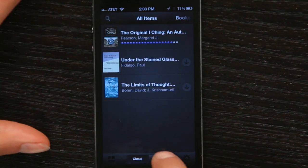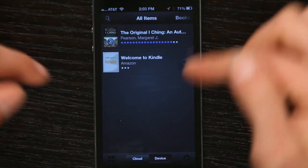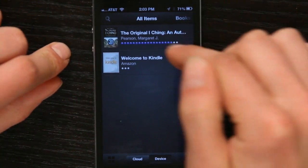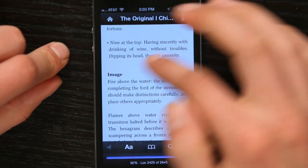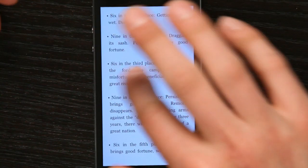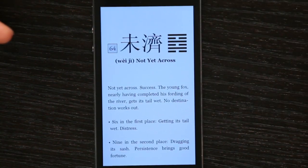But if I tap device over here, I can see what's actually stored on my iPhone. In this case, I've got one book stored here. And if I open it, I can read this to my heart's content and never use a drop of data. Thanks for watching. I'm Skylar.